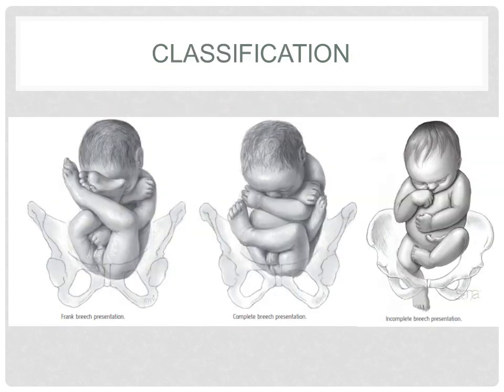Just a quick review — this is the classification or the different types of breech presentation. With a frank breech presentation, the lower extremities are flexed at the hips and extended at the knees, and thus the feet lie in close proximity to the head. A complete breech differs in that one or both knees are flexed. With incomplete breech presentation, one or both hips are not flexed, and one or both feet or knees lie below the breech, such that a foot or knee is lowermost in the birth canal. A footling breech is an incomplete breech with one or both feet below the breech.